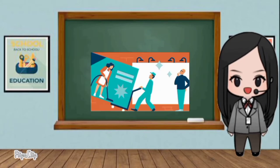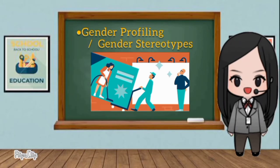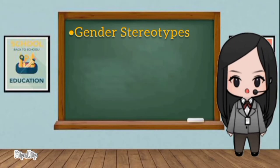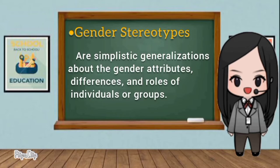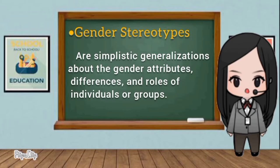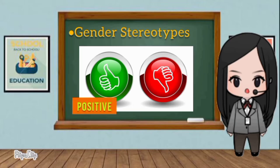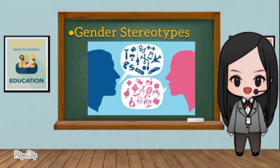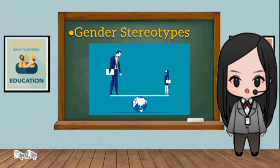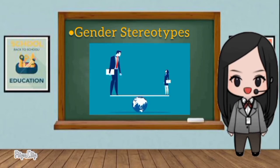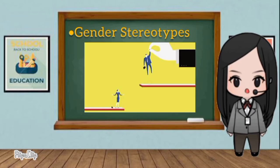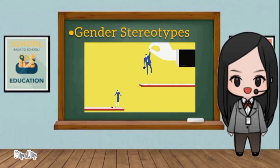First, we have the gender profiling or gender stereotypes. Gender stereotypes are simplistic generalizations about the gender attributes, differences, and roles of individuals or groups. Stereotypes can be positive or negative, but they rarely communicate accurate information about others. When people automatically apply gender assumptions to others regardless of evidence to the contrary, they are perpetuating gender stereotyping.